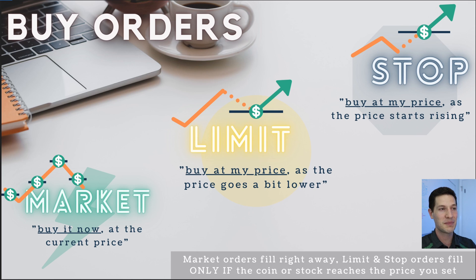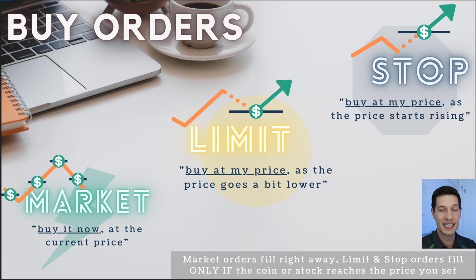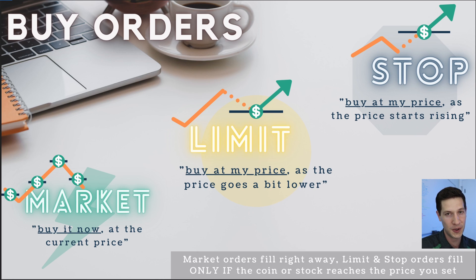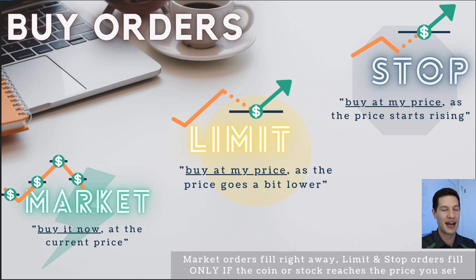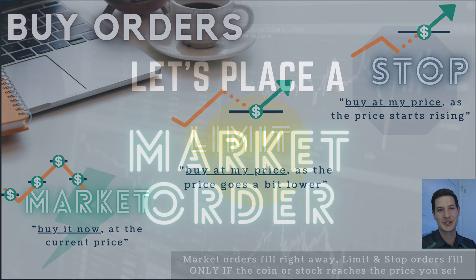So here are our buy orders: market, limit, and stop. Starting with market — this is the most straightforward type of order. This is actually the type of order used in regular Coinbase. You say how much you want to spend and it's going to buy Bitcoin at whatever the price currently is. This is the easiest one to understand.